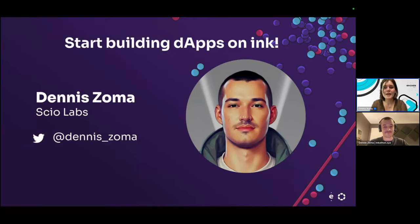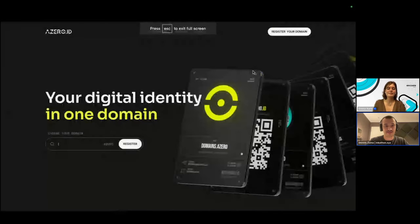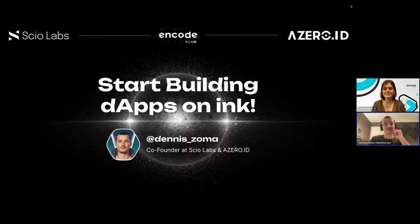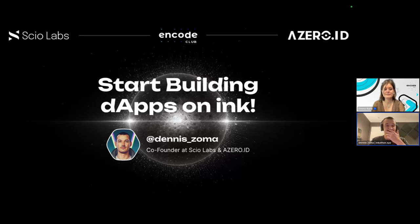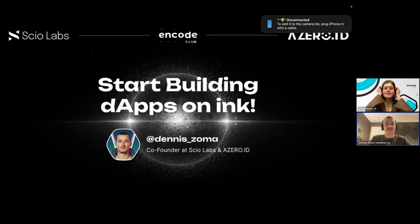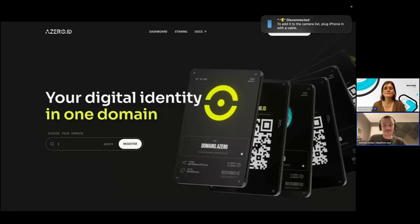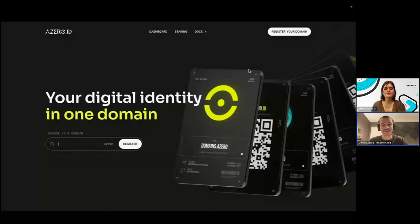Hello, lovely to have you with us! I'm very excited to hear what you've got planned — I'll stop sharing so you can share yourself. I'm Dennis, co-founder of Scio Labs. We built inkathon, which is what I'll present today. We also built AZero ID, the official domain name service fully written in ink, running on Aleph Zero, which is a substrate-based chain. You can try it out — it's one of the first ink production dapps. If you want a live ink experience in your browser, give it a try.